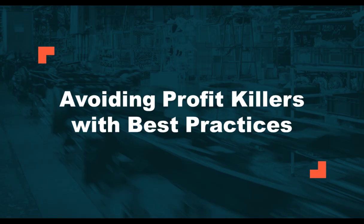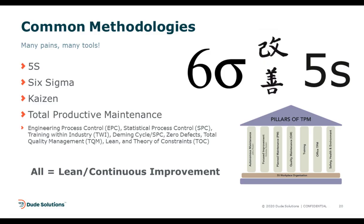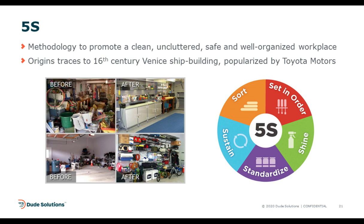Today's lecture is about avoiding profit killers through best practices and methodologies. There are many pains and many tools. Maybe you're already going through a Six Sigma initiative and want to know how maintenance operations can help, or perhaps 5S or TPM. Today is a high-level orientation with focus on where maintenance operations cross over with these methodologies. I'll strongly emphasize that you spend follow-up time researching these. It's all about continuous improvement and lean manufacturing. We're going to spend a few moments on several of these, with a deeper dive into total productive maintenance, starting with 5S.